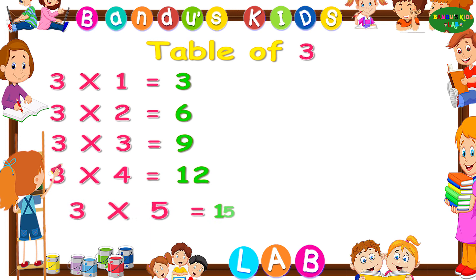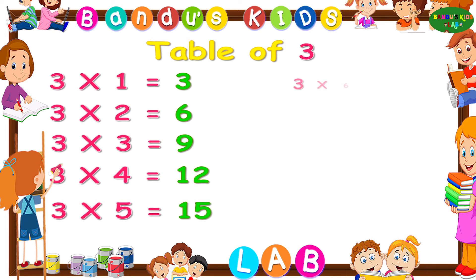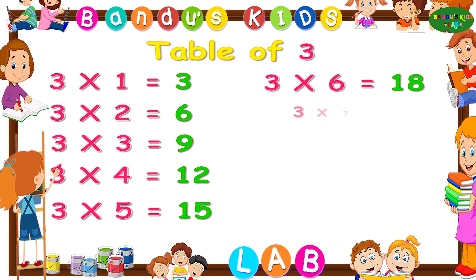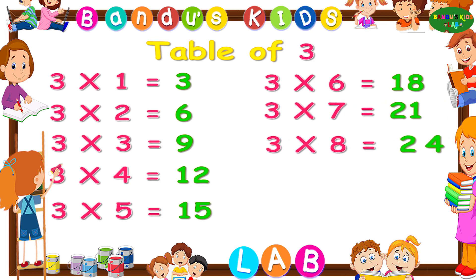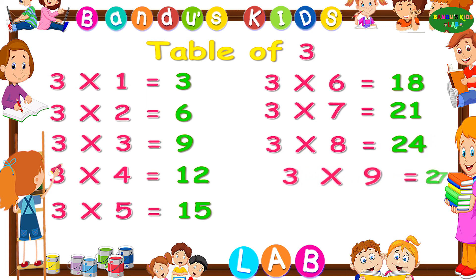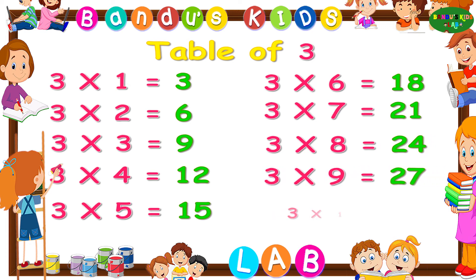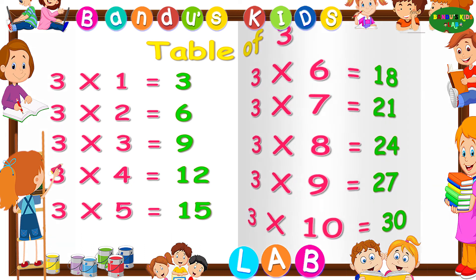Three fives are... fifteen! Three sixes are... eighteen! Three sevens are... twenty-one! Three eights are... twenty-four! Three nines are... twenty-seven! Three tens are... thirty!